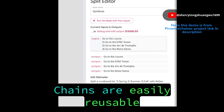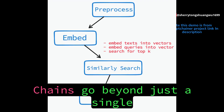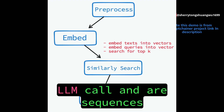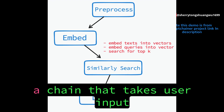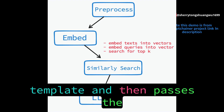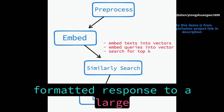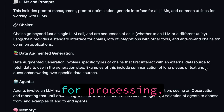Chains are easily reusable components which can be linked together. Chains go beyond just a single LLM call and are sequences of calls. One example of this is creating a chain that takes user input, formats it using a prompt template, and then passes the formatted response to a large language model for processing.